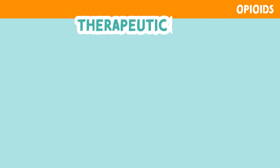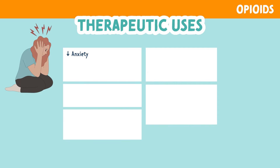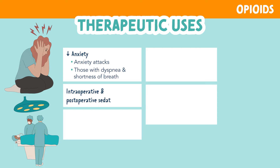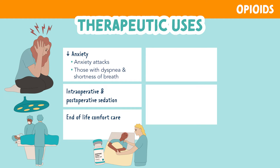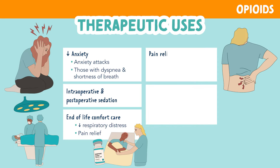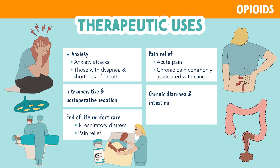Let's look at some therapeutic uses for opioids. Opioids decrease anxiety during anxiety attacks or for those with dyspnea and shortness of breath. They are also used for intraoperative and postoperative sedation, providing sedation and relaxation for patients following surgery. They're used for end-of-life care — morphine is often used in hospice care to decrease respiratory distress and provide pain relief. Opioids also help with general pain relief for acute pain and chronic pain associated with cancer. They're also used for chronic diarrhea and intestinal cramping, as opioids slow GI function.